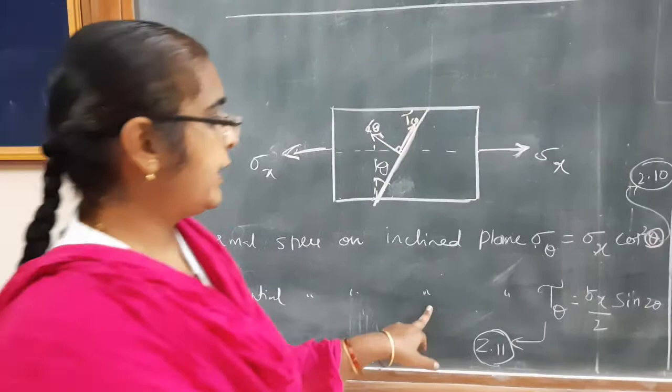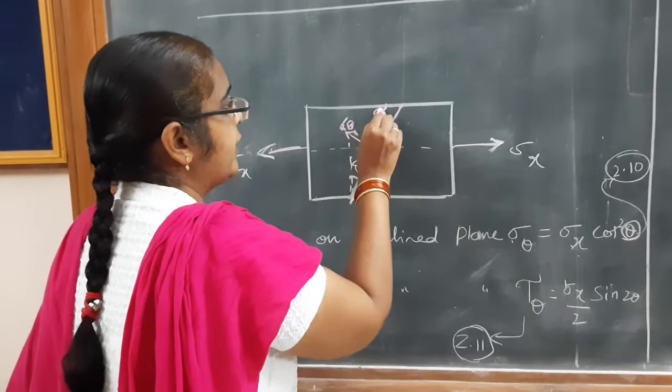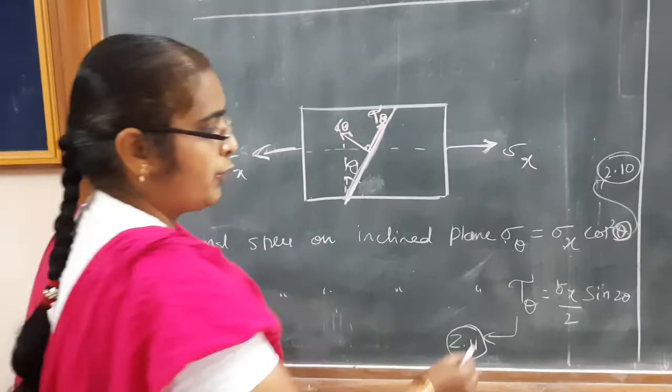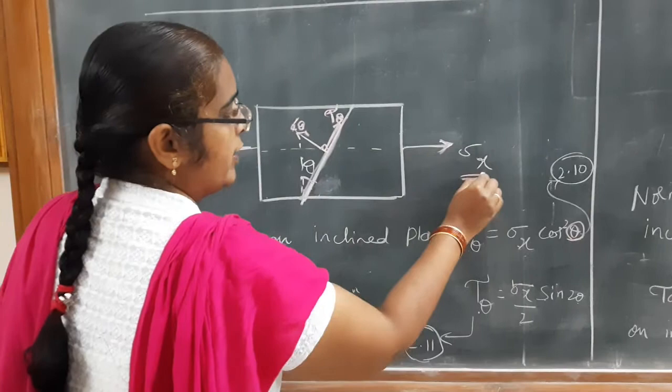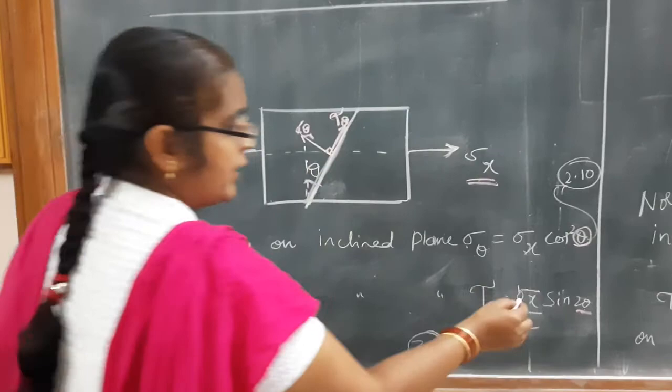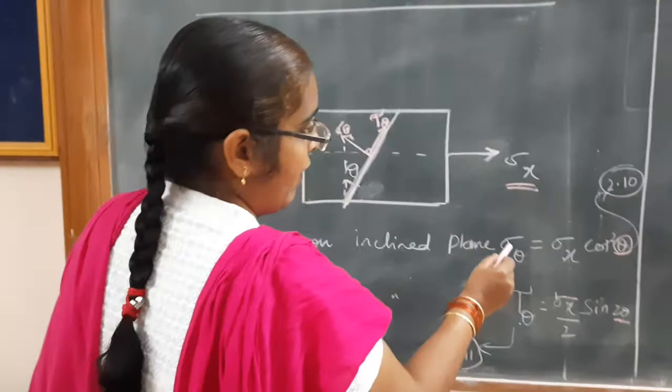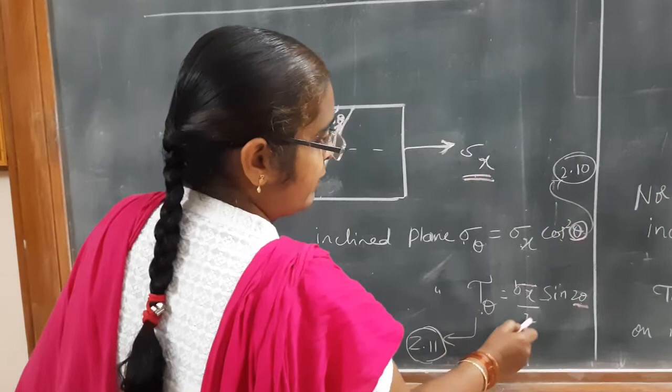Similarly, if you want to find the tangential stress on the inclined plane, tau theta is equal to sigma x by 2 into sine 2 theta. Sigma x is the stress value. Substitute the value of sigma x and theta — this inclination — and you can find the value of tau theta. So sigma theta equals sigma x cos squared theta, and tau theta equals sigma x by 2 sine 2 theta.